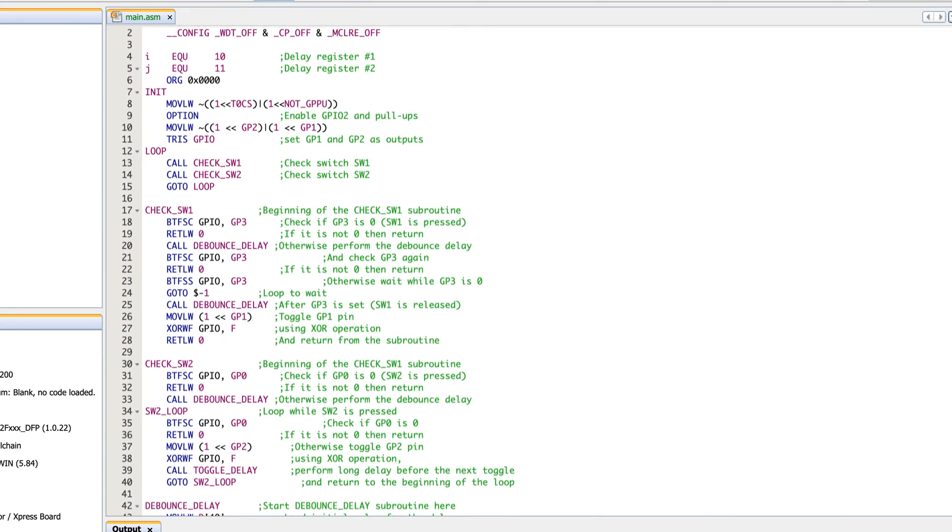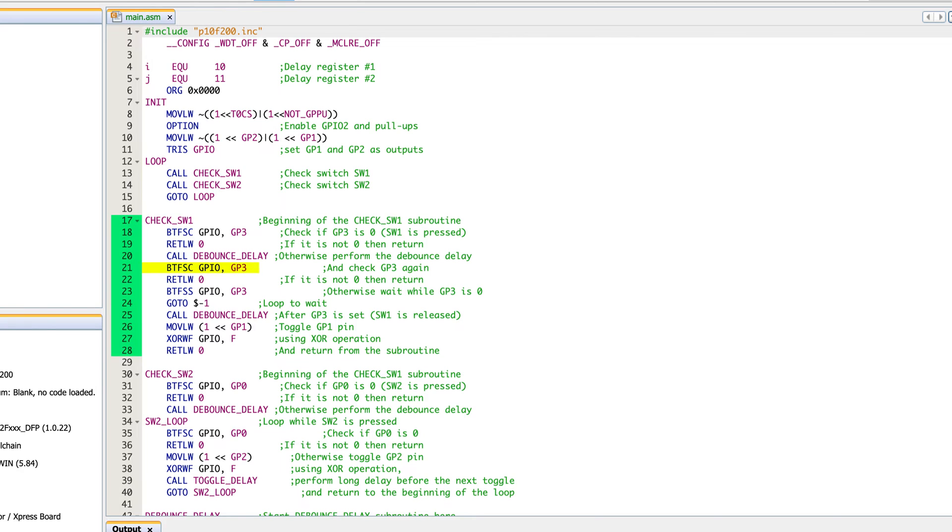When you call that debounce delay, you come back in line 21 and you run the exact same thing that you did in line 18. And if it is still low, if it's still pushed, then it skips line 22. We're now at 23 where we're doing the exact opposite command as 18 and 21. Instead of skipping the line when it is clear, you're skipping the line when it is set. So now what it's basically waiting for is it says you've definitely pressed it, but I'm not going to do anything until you've released it.